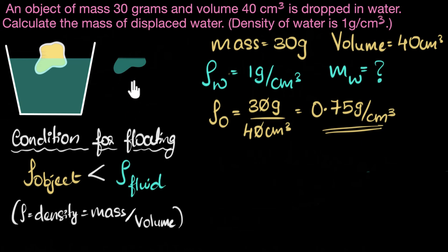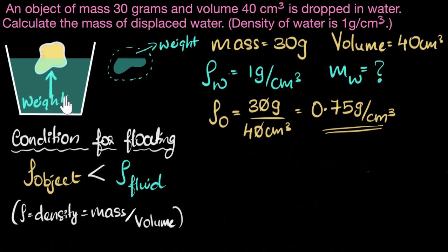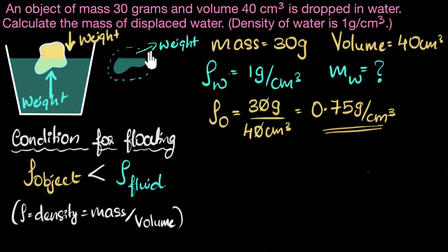We can use Archimedes' principle to figure this out. Archimedes' principle says that whenever an object is submerged in liquid, there's an upward force acting on it called the buoyant force. That force equals the weight of the displaced liquid. So whatever is the weight of the displaced liquid, that weight equals the buoyant force. Which means if you displace more liquid, it'll have more weight and the buoyant force will increase. Now, think about the forces on this stone: it's being pushed up by the buoyant force, and pushed down by its own weight due to gravity.